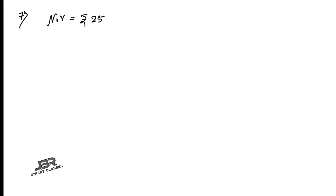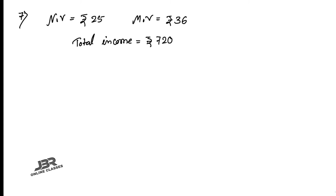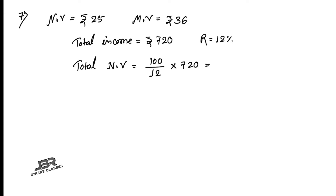Sum number seven: What sum should a person invest in ₹25 shares selling at ₹36 to obtain an income of ₹720, if the dividend declared is 12%? So nominal value of each share = ₹25, market value = ₹36, total income = ₹720, rate = 12%. Total nominal value = (100/12) × 720 = ₹6000.